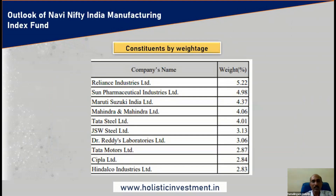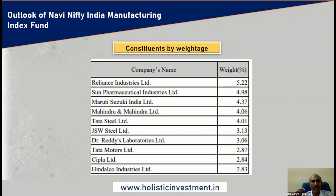The top 10 stocks in this particular index are: Reliance Industries, Sun Pharma, Maruti Suzuki, Mahindra and Mahindra, Tata Steel, JSW Steel, Dr. Reddy's Lab, Tata Motors, CIPLA, and Hindalco. These are all well-known manufacturing companies. Even for the number one stock, Reliance Industries, they have given only 5.22% weightage. That means this particular index at the individual stock level is well diversified, unlike other indexes where the top 10 stocks can have 50 to 55% exposure.